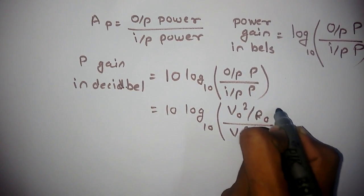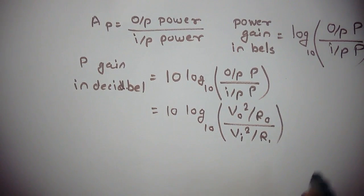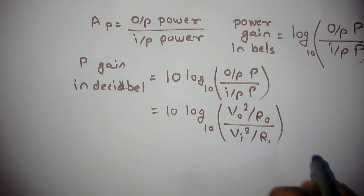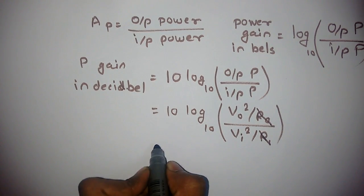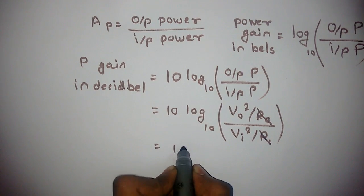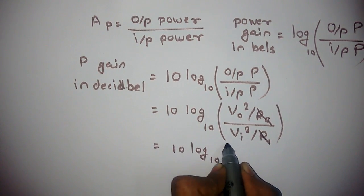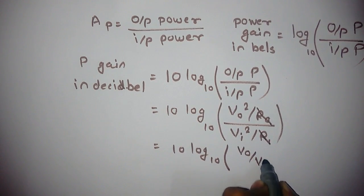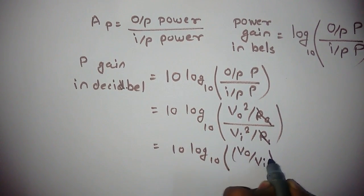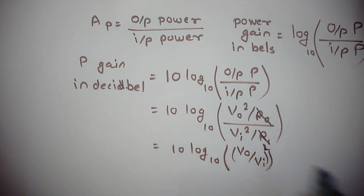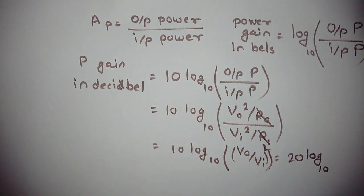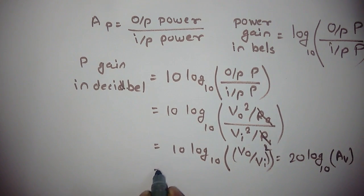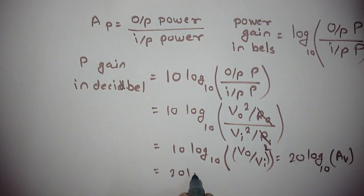Okay, now let's consider RO and Rin are the same, so this equation will become 10 log base 10 VO by Vin. And square of this, if you take 2 outside, then it will become 20 log base 10, and AV, that is voltage gain, which is equivalent to 20 log base 10 AI, current gain.